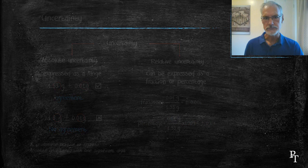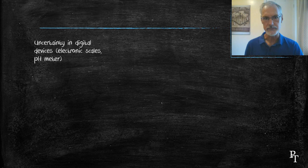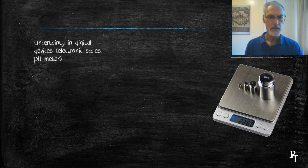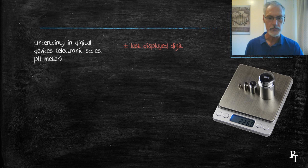How we obtain the uncertainty depends on the device we're using to make the measurement. If we happen to have a digital device, such as an electronic balance, an electronic thermometer, or a pH meter, we usually record it to plus or minus the last displayed digit.